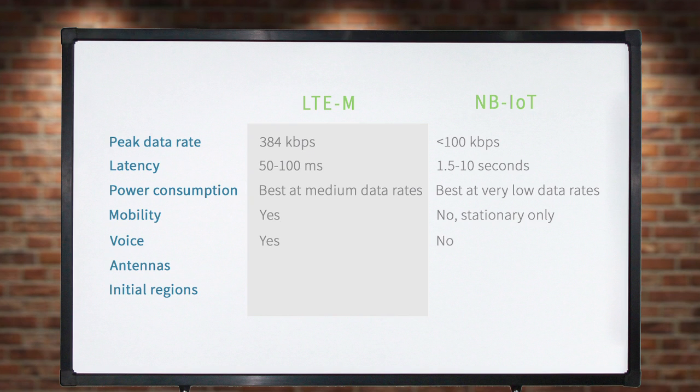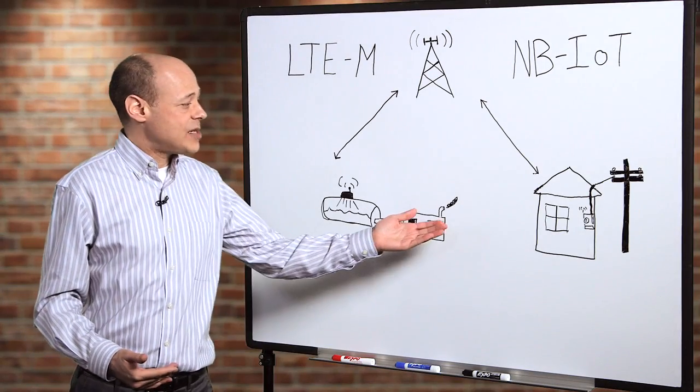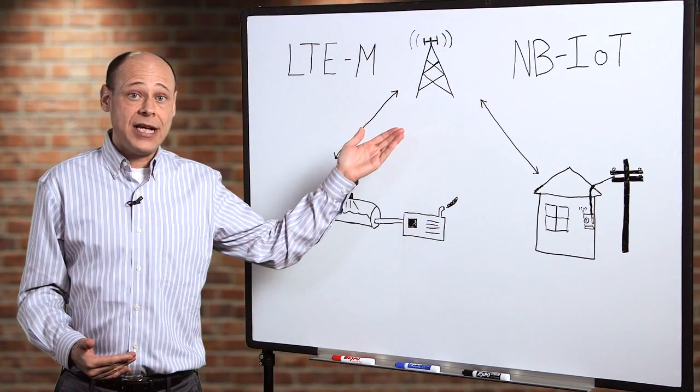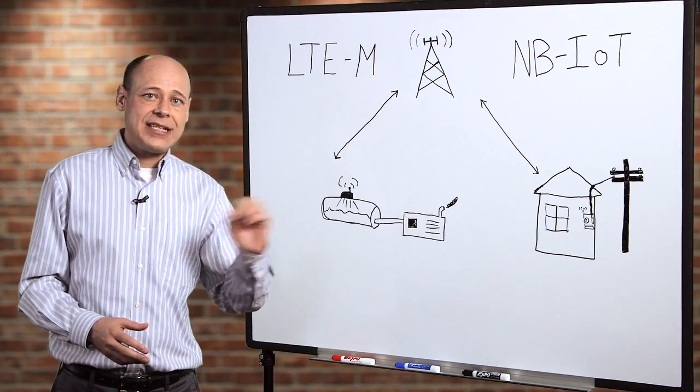NB-IoT is designed for lower data rates, where small delays are fine. For example, a smart meter sending infrequent updates from a fixed location. Its battery use is optimized for that type of situation.